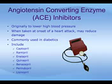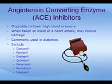Angiotensin converting enzyme, ACE inhibitors, are a group of drugs originally developed to lower high blood pressure — hypertension. They are also given to people who have had a heart attack in an attempt to prevent further attacks and to prolong life, and when taken at the onset of a heart attack may in fact reduce the damage. ACE inhibitors include captopril, ramipril, enalapril, quinapril, benazepril, perindopril, and lisinopril.